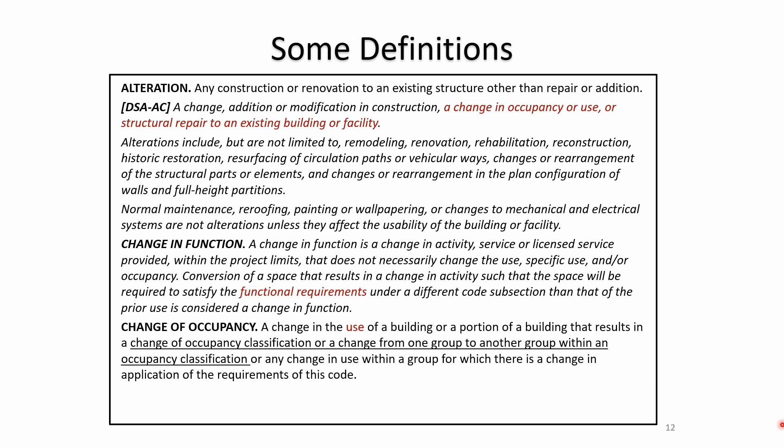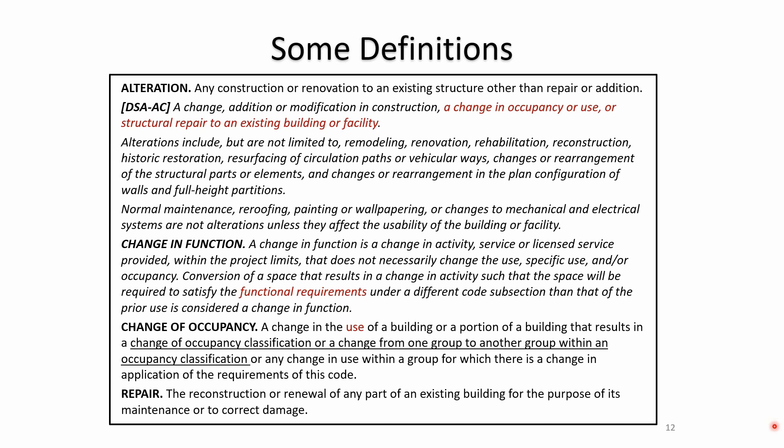Then there's the change of occupancy. This is probably the most familiar term. If you've got a B occupancy or an I occupancy and you're proposing to change from one to the other, obviously there are implications. The definition of repair — reconstruction or renewal of any part of an existing building for the purpose of maintenance or to correct damage — was added in the 2019 code, really to clarify between maintenance, repair, and an alteration.